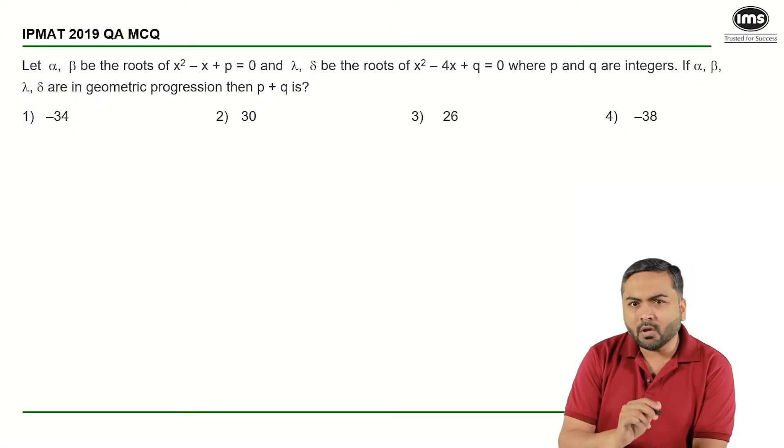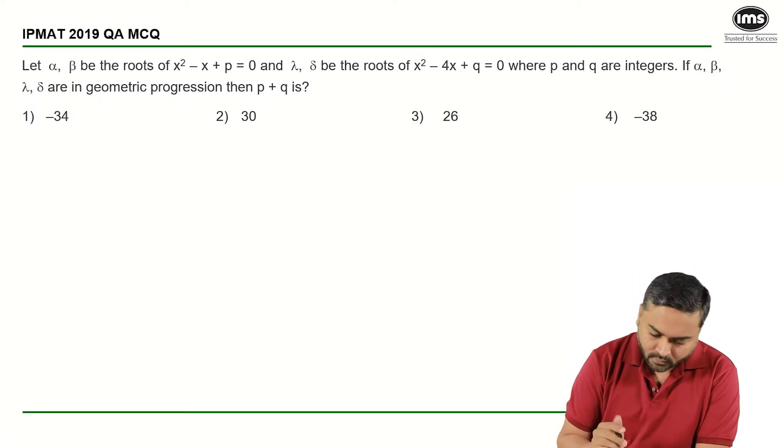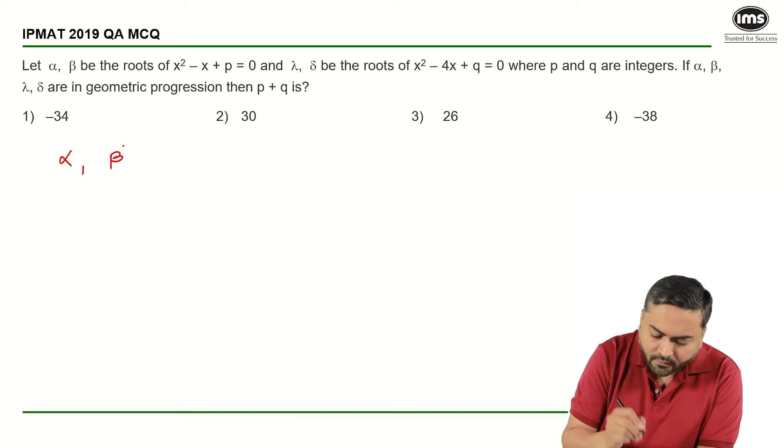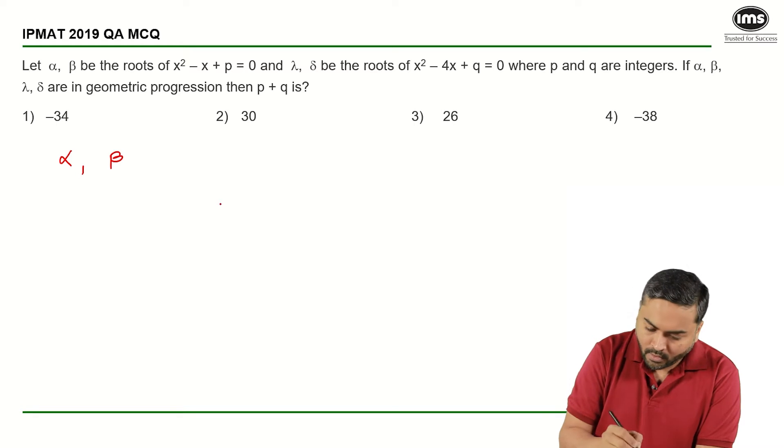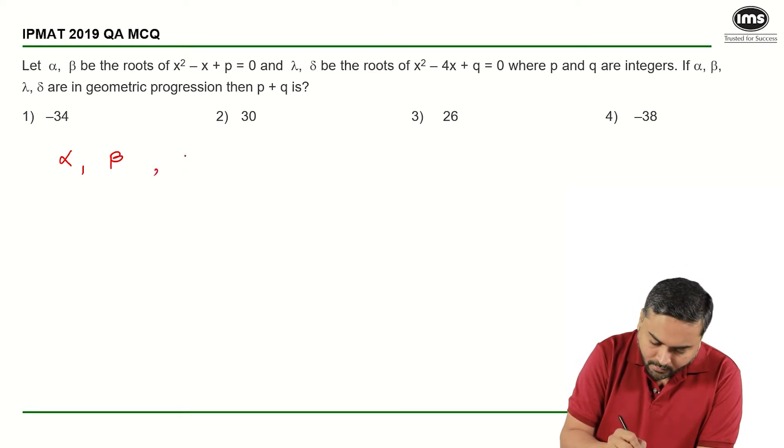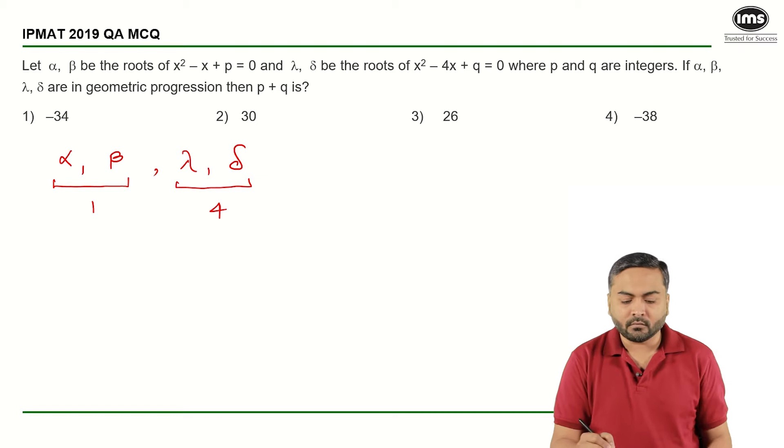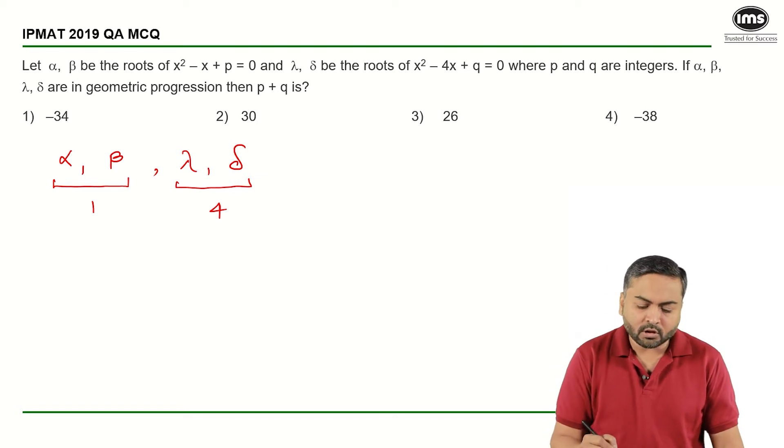One very smart approach to solve this question. I know that alpha and beta are the roots of the first equation and gamma and delta are the roots of the second equation. Sum of the roots here is 1 and sum of the roots here is 4. I need to find out the value of P plus Q. The roots are in geometric progression.